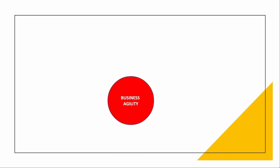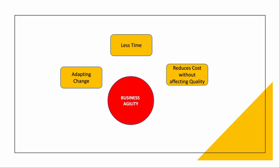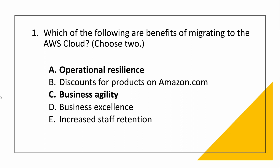Since the question asks for two answers, let's see what business agility means. Agility means change. AWS can easily adapt to change in less time and reduce cost without affecting quality. You want to reduce your cost without getting quality affected — that will attract more customers. So the answer to this question is operational resilience and business agility.